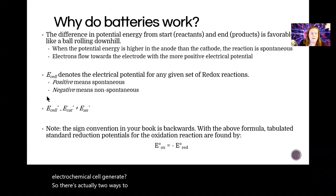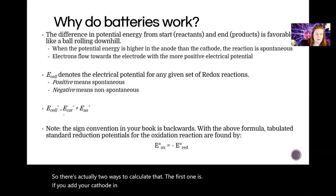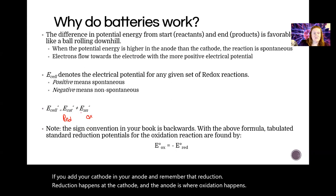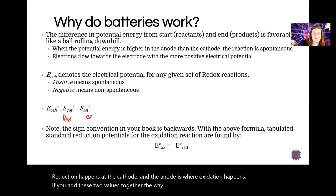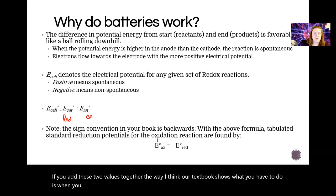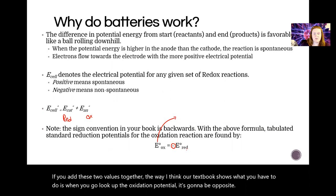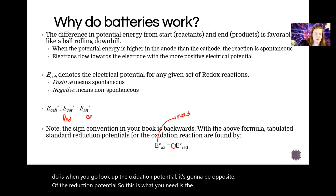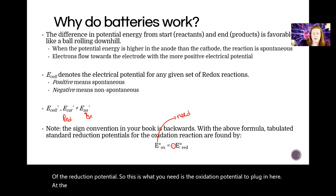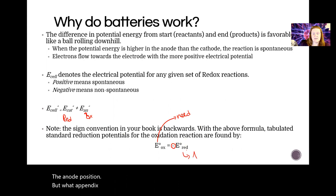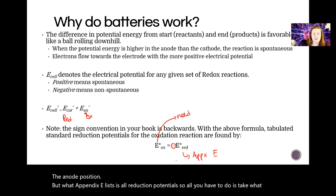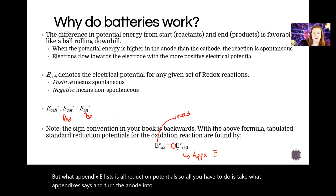There are actually two ways to calculate that. The first one: you add your cathode and your anode values together. Remember that reduction happens at the cathode and oxidation happens at the anode. When you look up the oxidation potential, it's going to be opposite of the reduction potential. What Appendix E lists is all reduction potentials, so you take what Appendix E says and turn the anode value into a negative, then add these together.